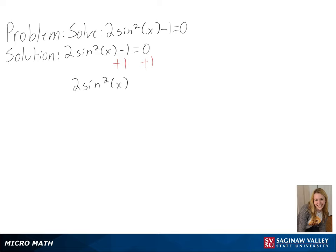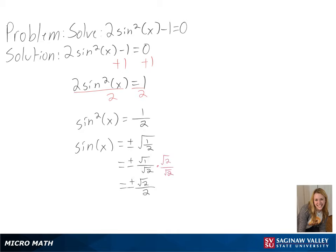We can do this by first adding 1 to both sides, then dividing both sides by 2. We then take the square root of both sides and simplify to get positive or negative square root of 2 over 2.